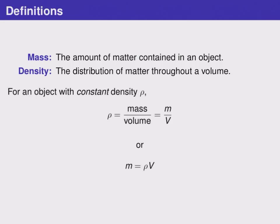If we have a constant density, usually called by the Greek letter rho, then rho is equal to mass divided by volume, or m over V. Moving the V over, we get that mass is equal to density times volume, which is the key formula we're going to use.